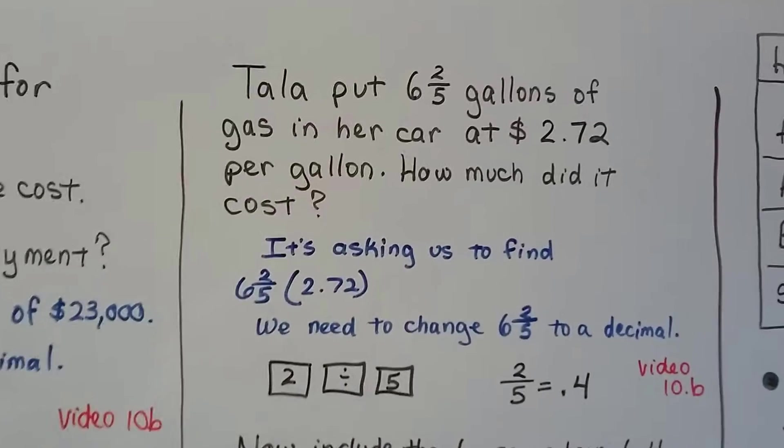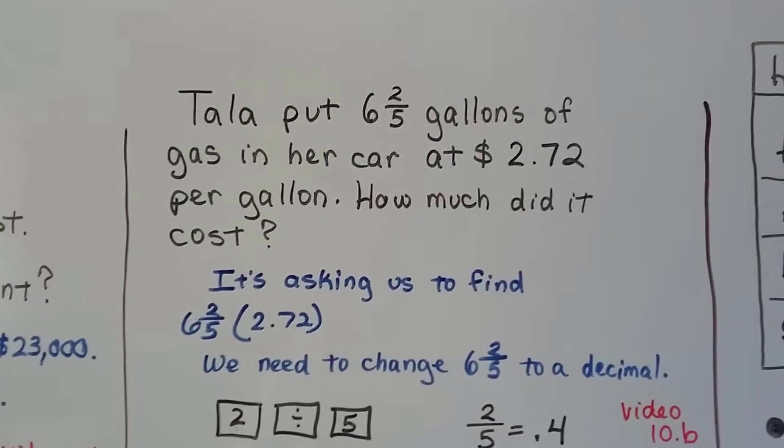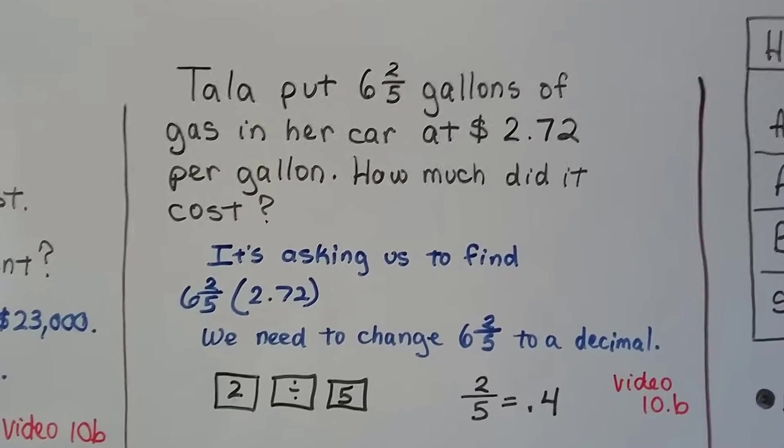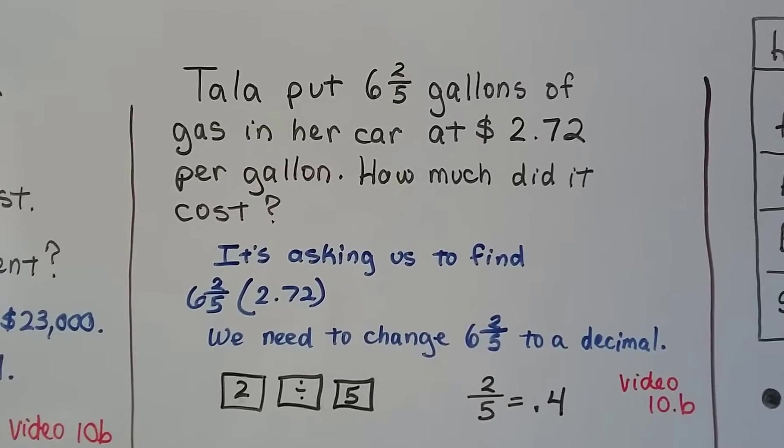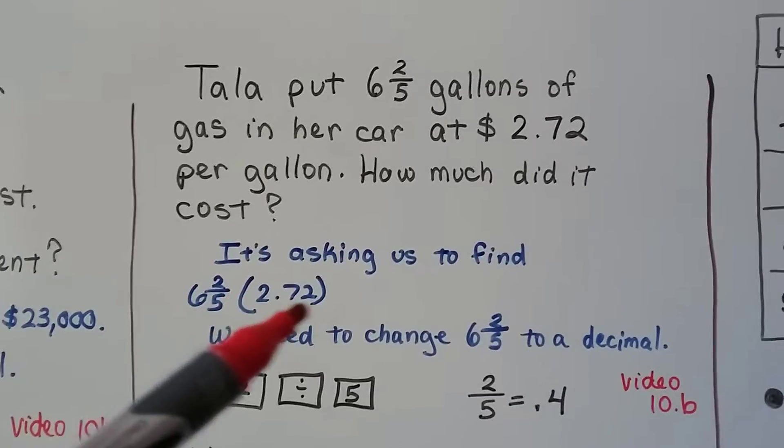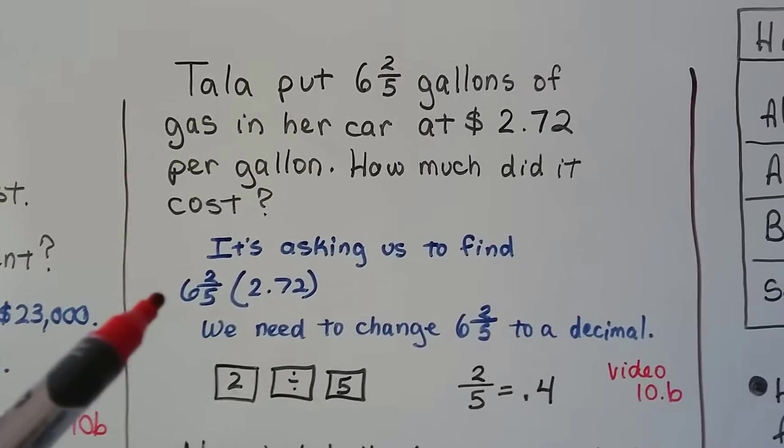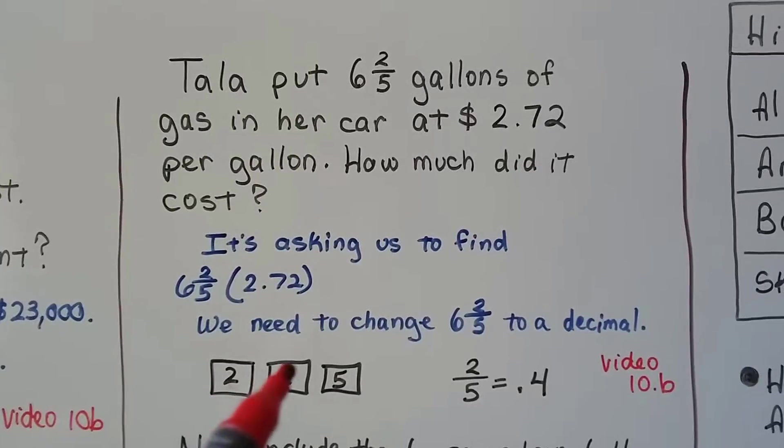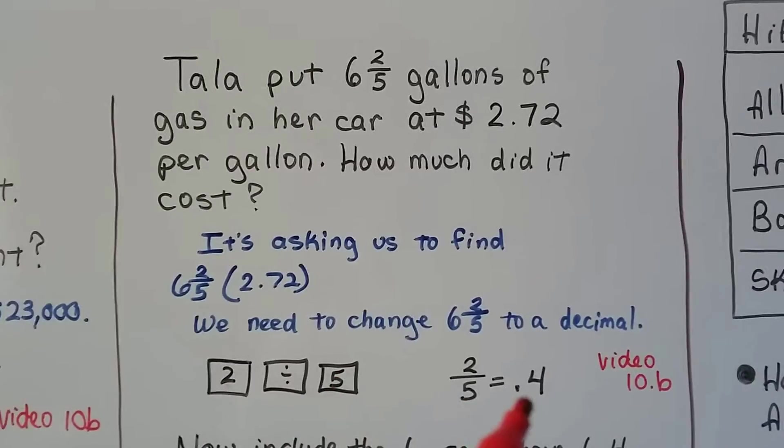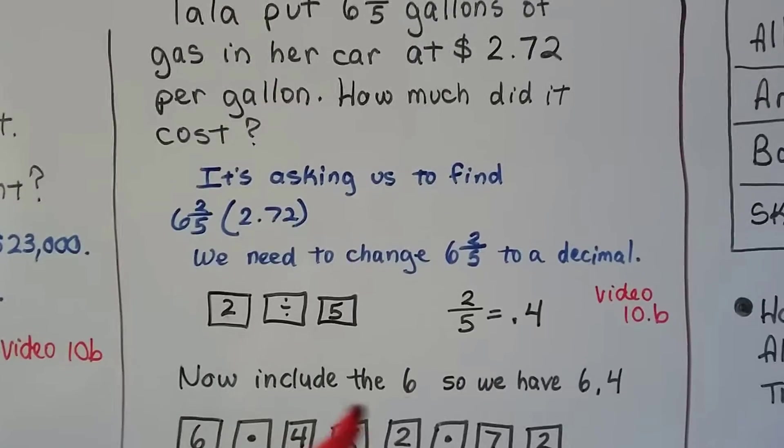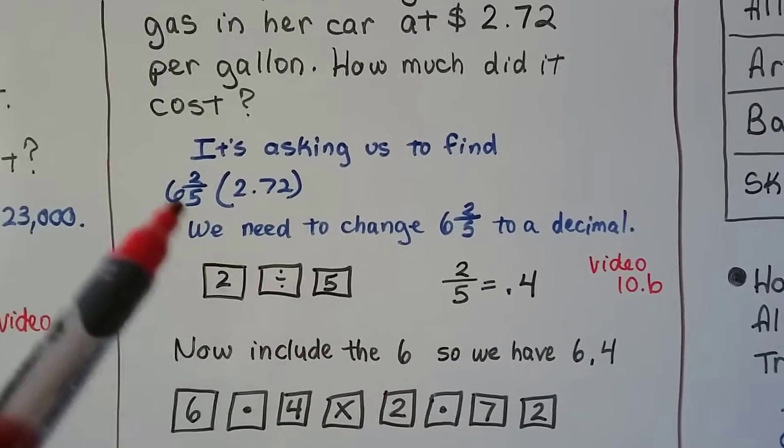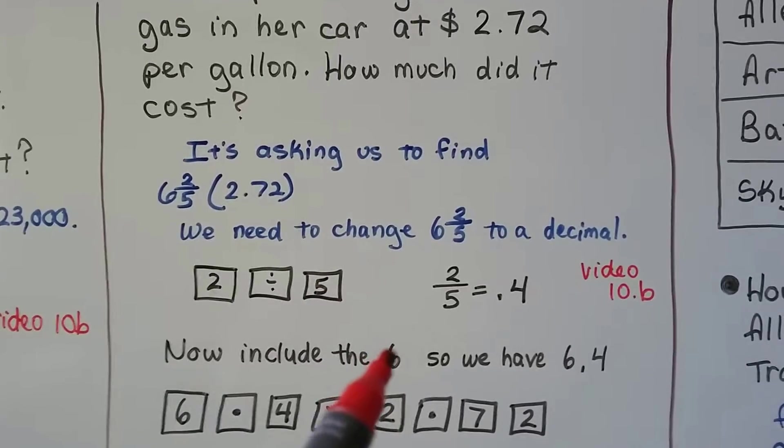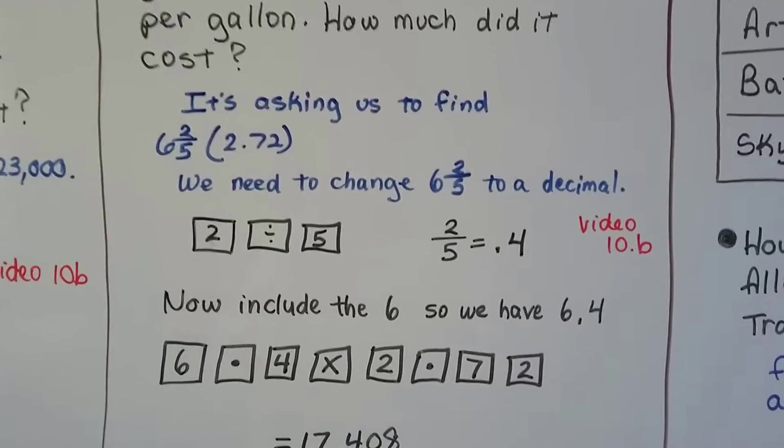So, here's what happens when we've got a mixed number. Tala put six and two-fifths gallons of gas in her car at $2.72 per gallon. How much did it cost? So, it's asking us to find six and two-fifths times $2.72. We need to change the six and two-fifths to a decimal. So, we ignore the six and we put two divided by five and we get a 0.4, four-tenths. Now, we've got to put that six back on. We can't forget about that six. He doesn't get changed when we convert it to a decimal. He just sets off to the side and waits till we're done. So, we have 6.4.